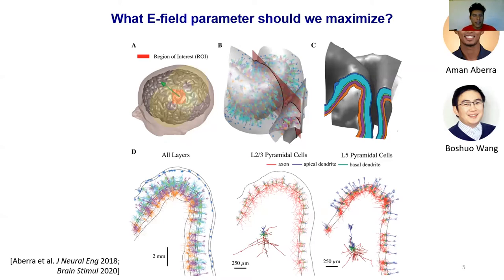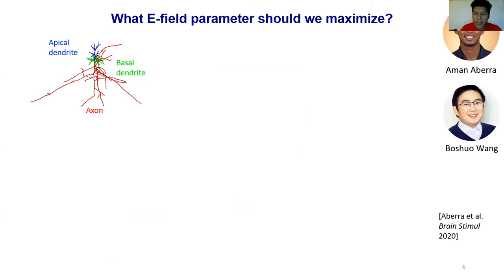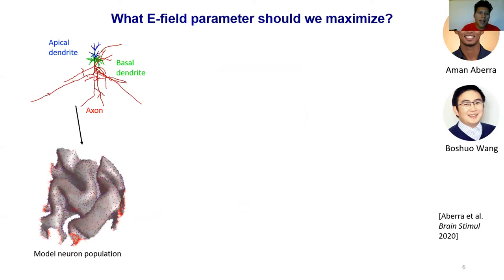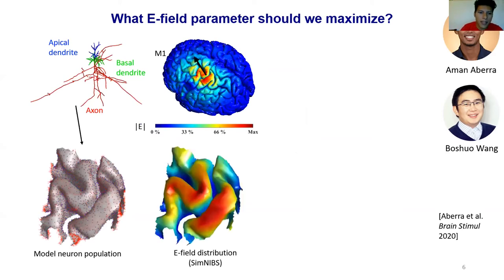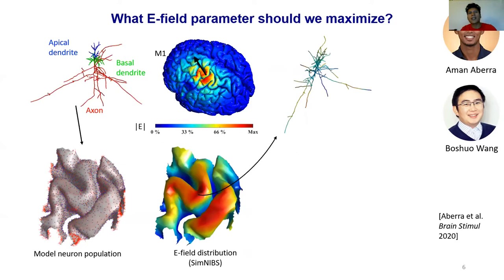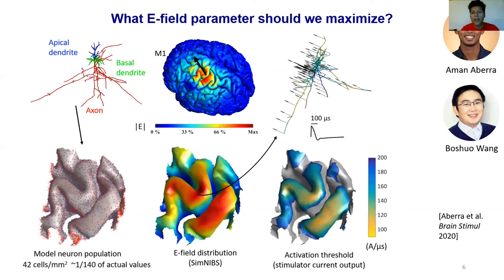The multi-scale model consists of standard head meshes used for FEM, inside which realistic representations of neural models are embedded in the cortical layers. They ran electric field simulations in SimNIBS, obtained the electric field results, and coupled these electric fields with the realistic neurons to model their dynamics. From this they were able to compute stimulation current thresholds — the amount of current needed to activate individual neurons.